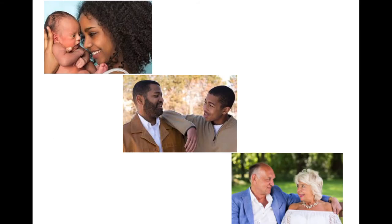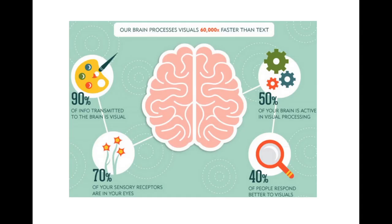Throughout life, the visual sensory mode is very important — regardless of infancy, young adulthood, or old age. It's been said that 90% of all information transmitted into our brains is visual. 70% of your sensory receptors are in your eyes, 50% of your brain is active during visual processing, and 40% of people respond better to visual information.